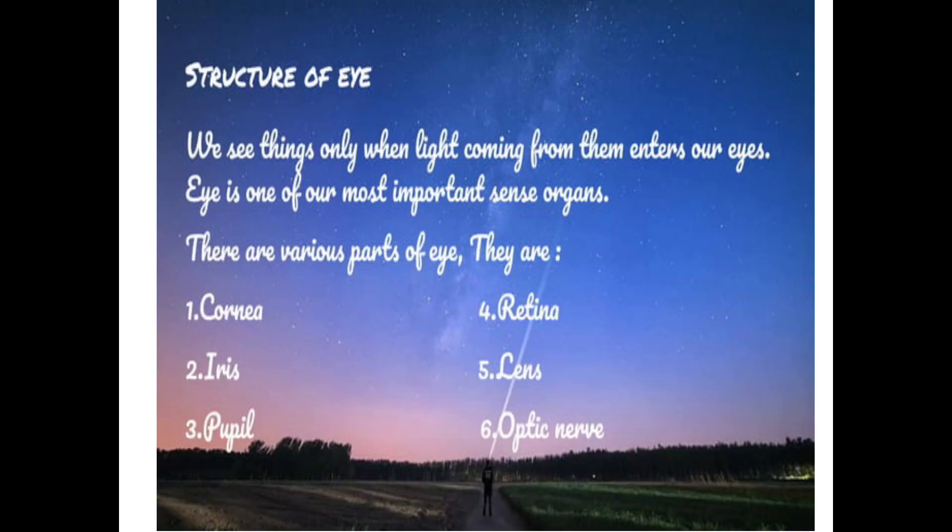Now structure of eyes. We see things only when light coming from them enters our eyes. Eye is one of the most important sense organs. There are various parts of eyes. They are cornea, iris, pupil, retina, lens, and optic nerve.